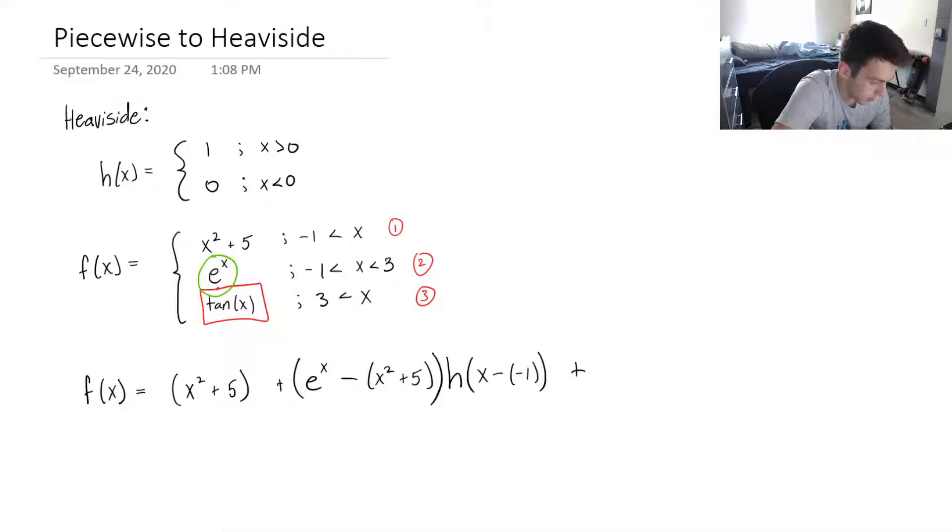So plus tan of x minus e to the x, okay. And then when does it change? So I'm gonna do Heaviside of x minus—it changes from e to the x to tan of x when x is three. So I'm putting in a three, and you're done. That is literally it. That's all you have to do.